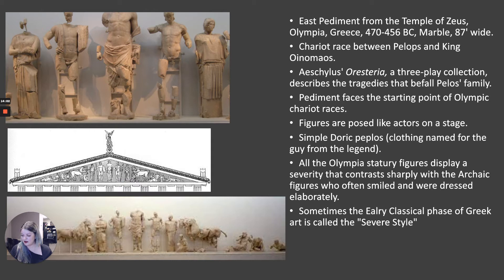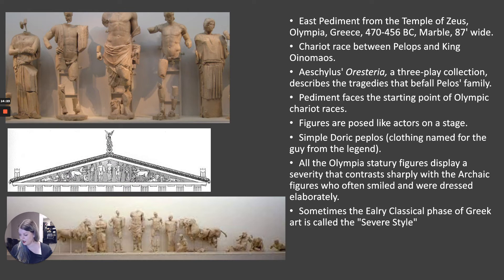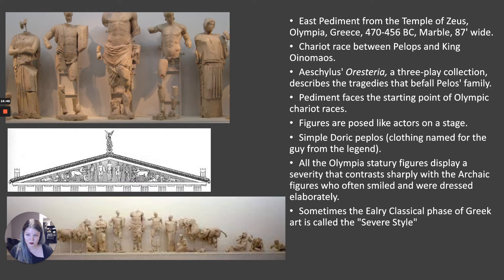There's a king named Oinomaus who has a daughter named Hippodamia. He's told by an oracle that he will die when his daughter is married. So whenever a suitor comes, he challenges them to a chariot race — if he wins, he kills them; if they win, they get to marry his daughter. But it's rigged because he is the son of Ares, who gave him divine horses. So he basically can't lose, and any suitor's challenge is really a death sentence. He does this for years.